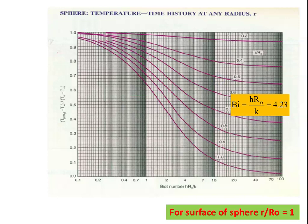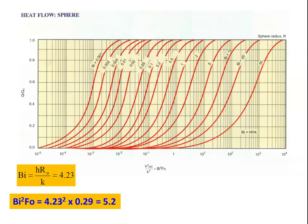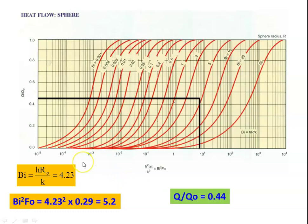To calculate the surface temperature, use the Heisler chart with Biot number 4.23 and r/r_o = 1 for the surface. Drawing the vertical line, the temperature ratio (T_r_o − T_∞) / (T_o − T_∞) = 0.26. So T_r_o − 2 / (10 − 2) = 0.26, giving T_r_o = 4.08°C. To calculate the heat transfer, use the Grober chart. The x-axis value is Bi² × Fo = (4.23)² × 0.29 = 5.2, and the Biot number is 4.23. Drawing the vertical line at 5.2 meeting the Biot number 4.23 curve, Q/Q_o = 0.44.